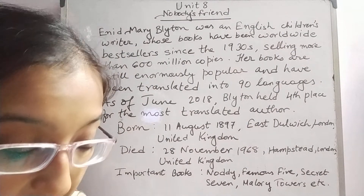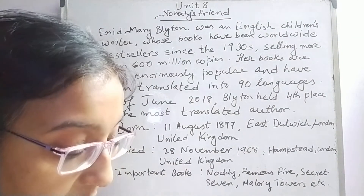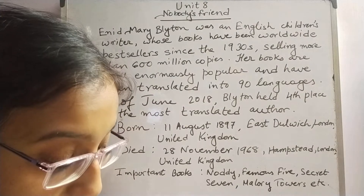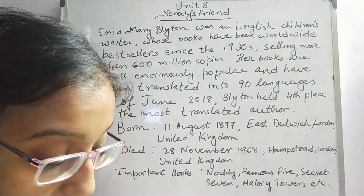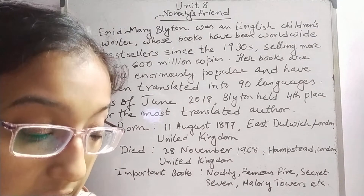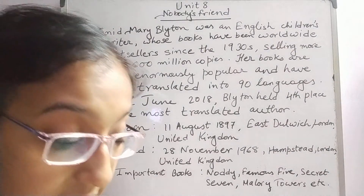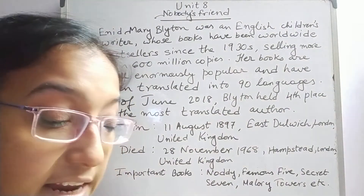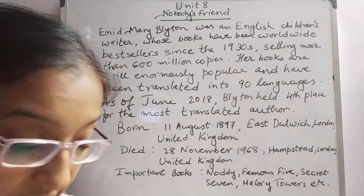Nobody's Friend by Enid Blyton. She had some sweets that she wouldn't share. She had a book that she wouldn't lend. She wouldn't let anyone play with her doll — she is nobody's friend. He had some toffee and ate every bit. He had a tricycle he wouldn't lend. He never let anyone play with his train — he is nobody's friend.